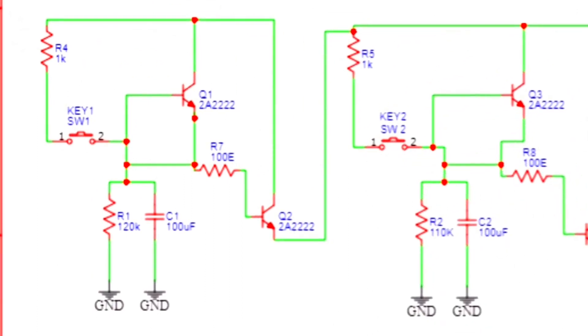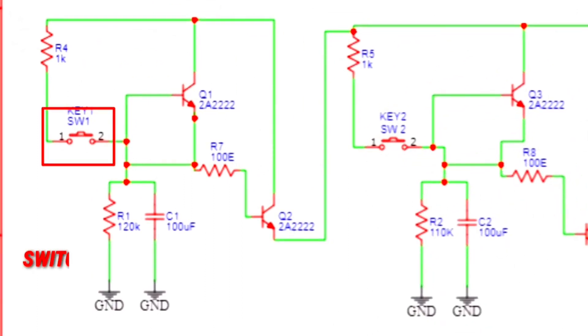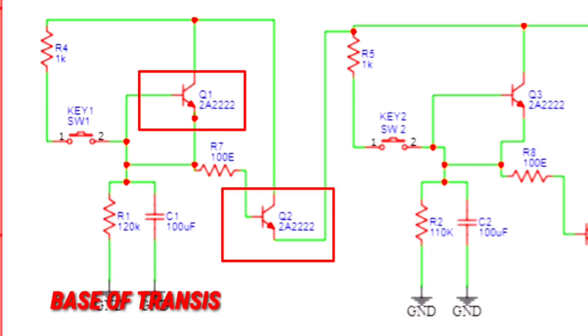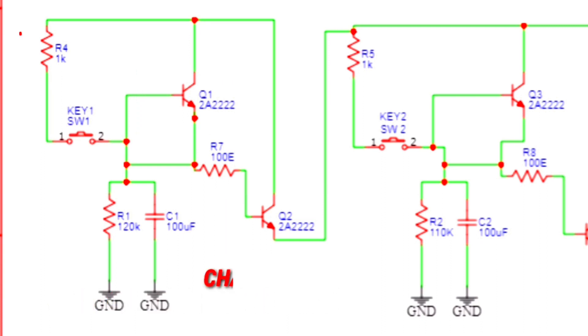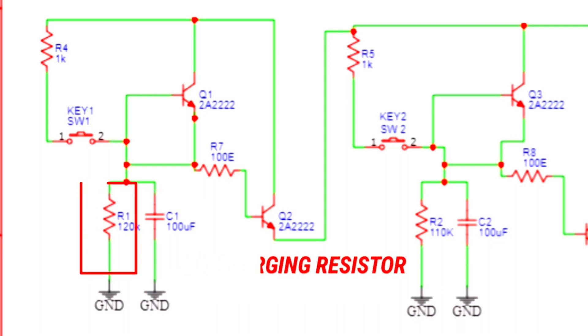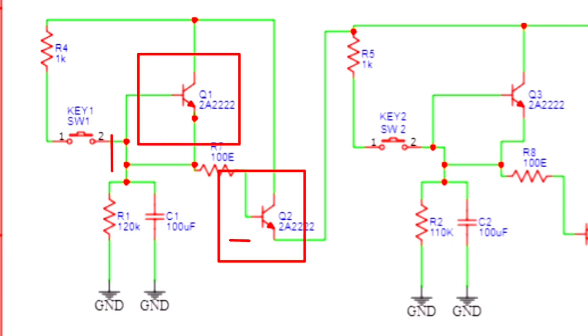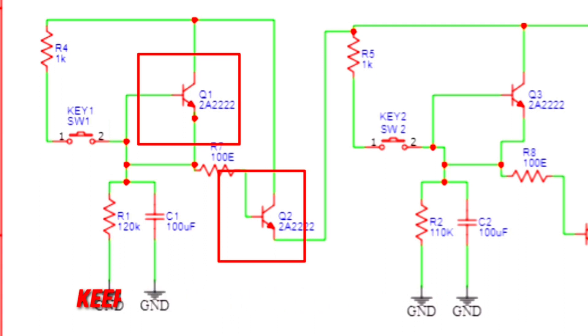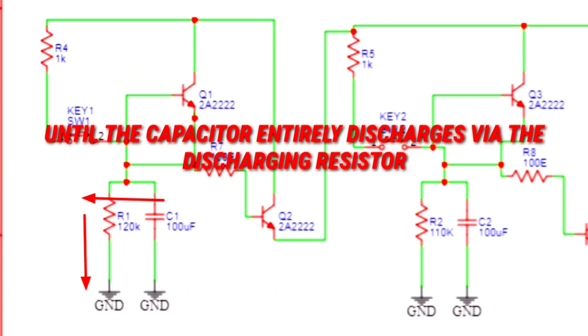Now let's see the first section. If we push the switch S1 by turning it on, the base of transistor Q1 turns on which turns the base of transistor Q2 on and charges the capacitor C1. Now when the switch turns off, the capacitor discharges via our discharging resistor R1 of 120 kOhm by supplying enough voltage at the base of Q1 to keep it or maintain it in its ON state until the capacitor entirely discharges.